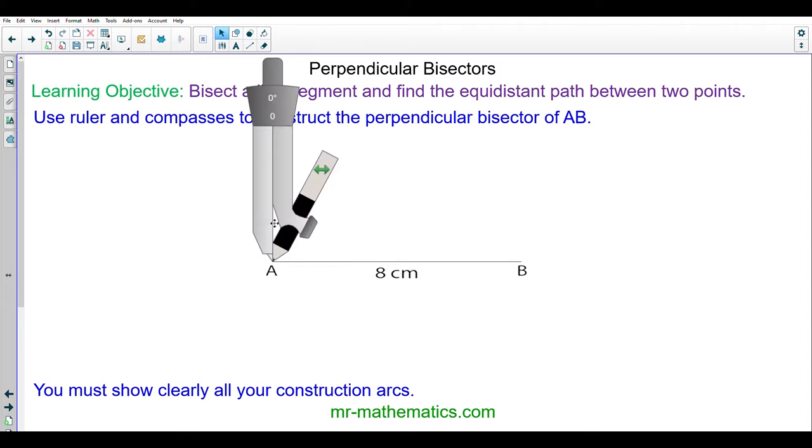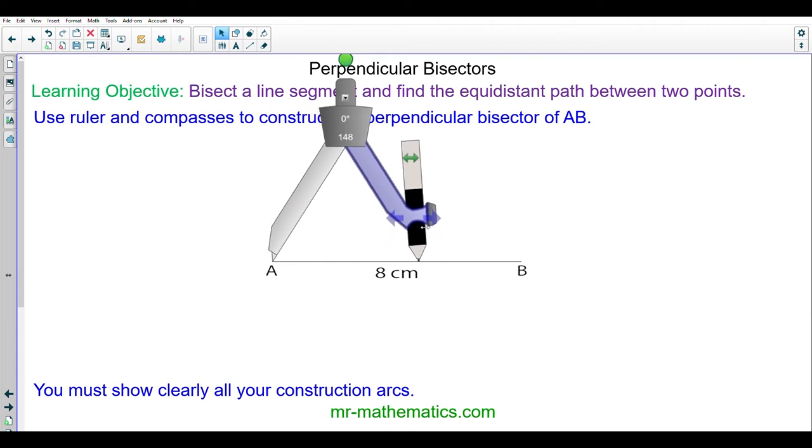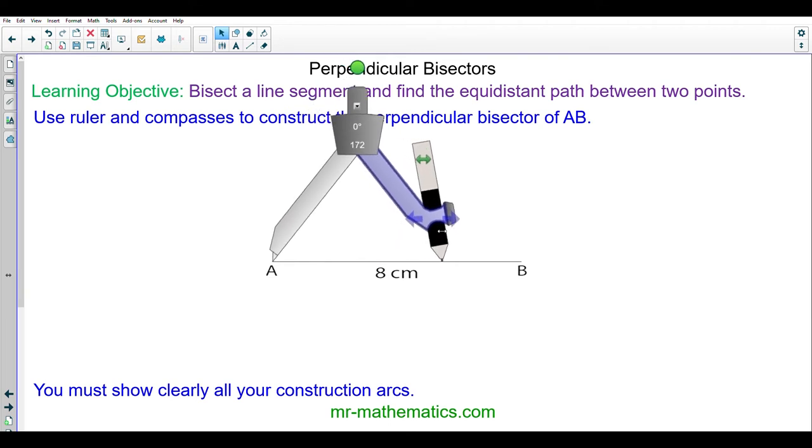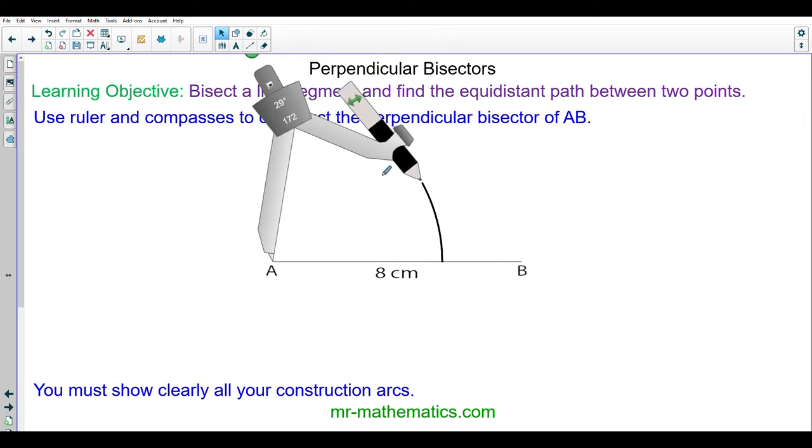I open up the radius to greater than half the length of the line and now I cannot change its radius because I need to use the same arc from point B.